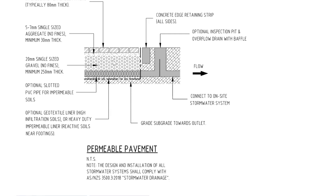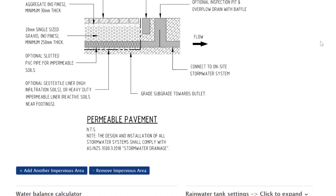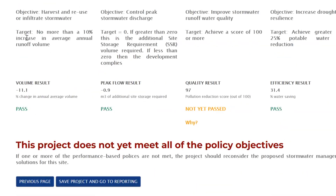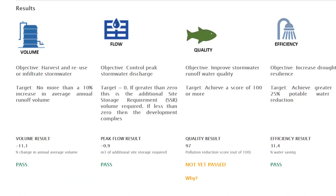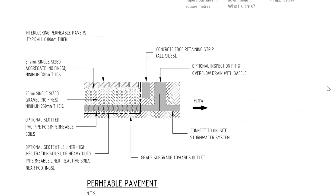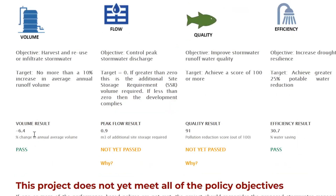The simplest approach we recommend for just about any development is permeable paving with some sort of storage. You can't put permeable pavers straight onto compacted building soil or compacted clay - you need a proper base. Permeable paving will get more water into the ground and help you pass the volume criterion. You can also increase or decrease stormwater tank sizes to change your volume score. The target is no more than a 10% increase in average annual volume compared to pre-development levels.